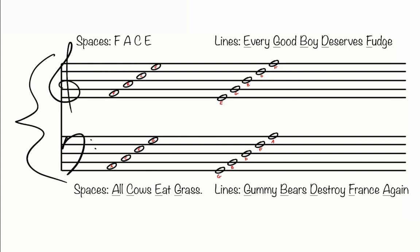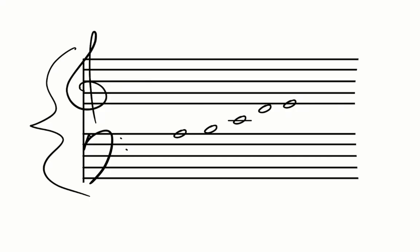There are notes in between the staffs, however, and this leads us into ledger lines. Between the top line of the bass clef staff and the bottom line of the treble clef staff, there are three additional notes.